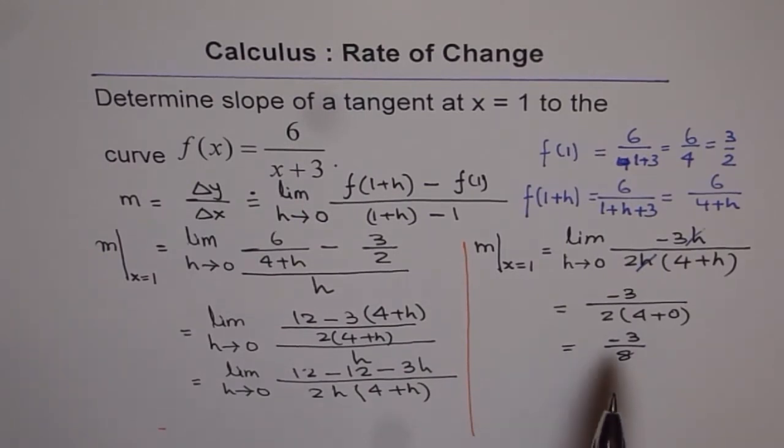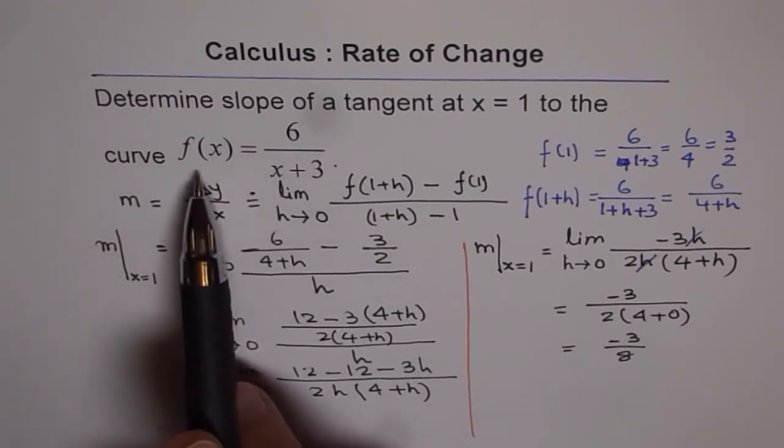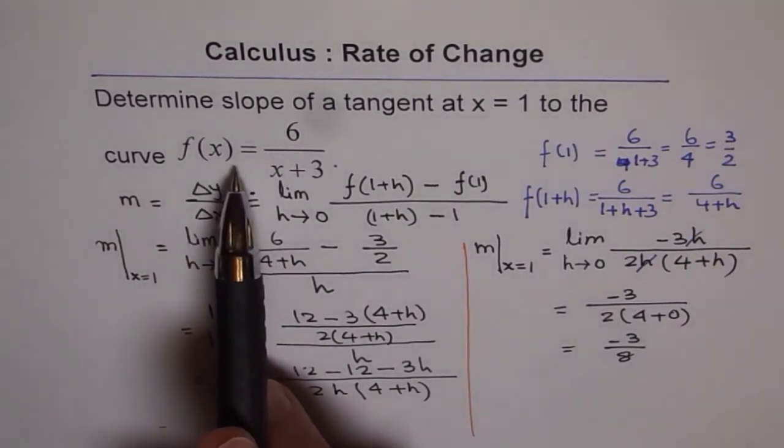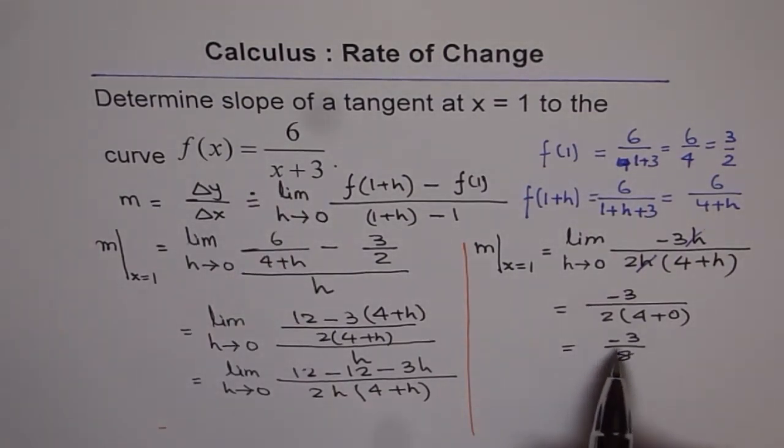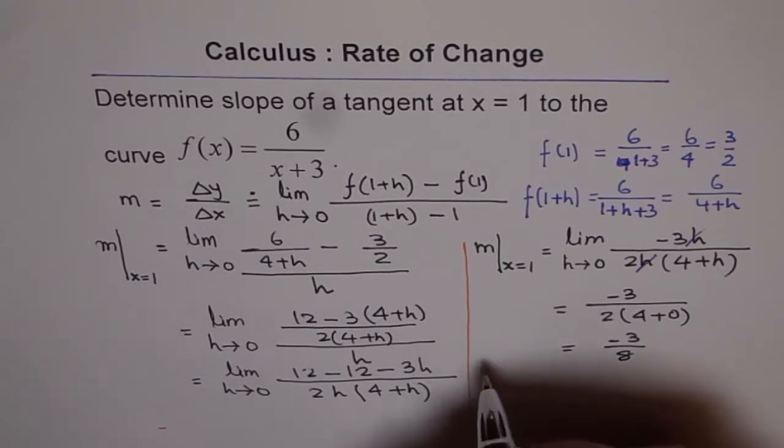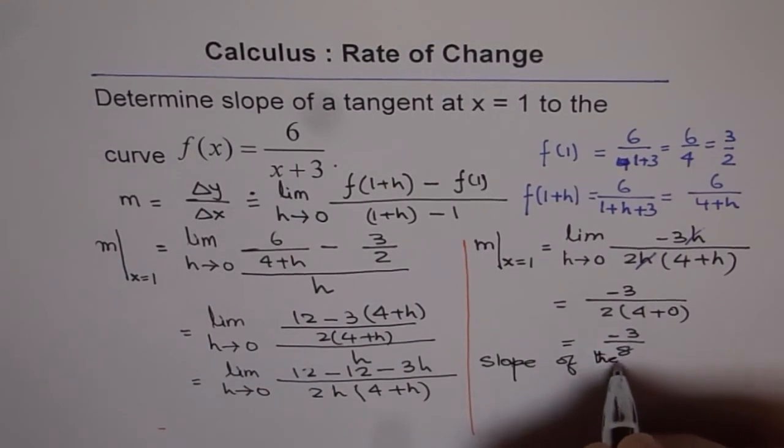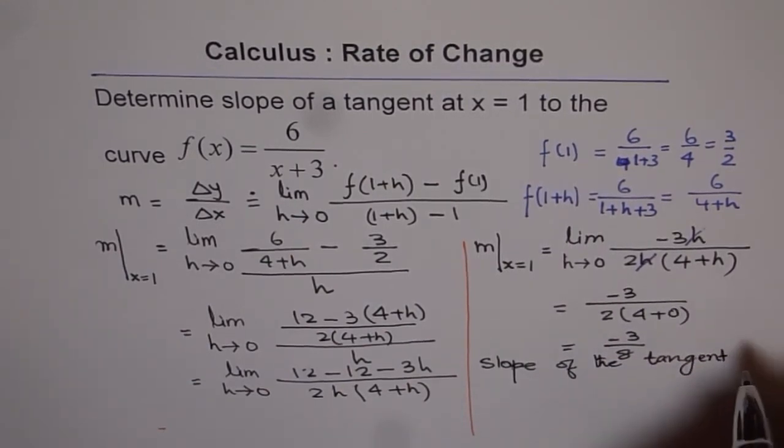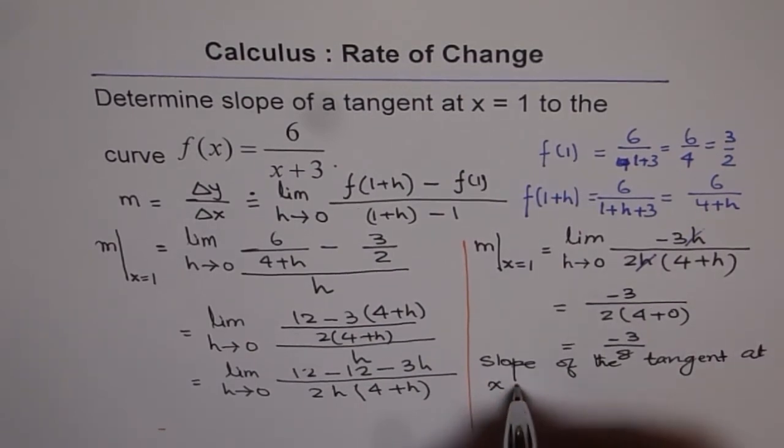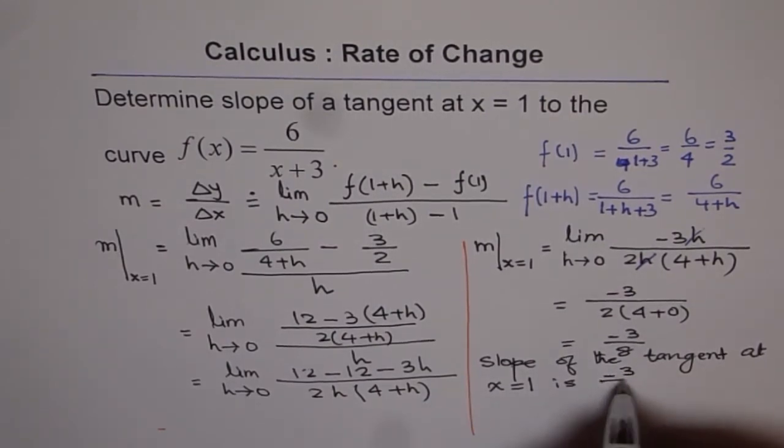Therefore, slope of the tangent at x = 1 for our given function f(x) = 6/(x+3) is -3/8. So, that is our answer. So, we say slope of the tangent at x = 1 is -3/8, correct?